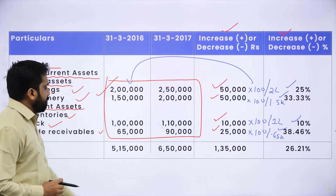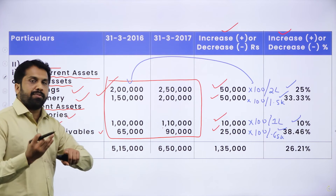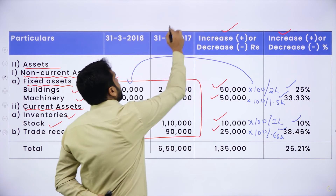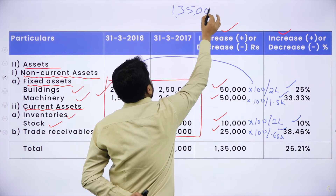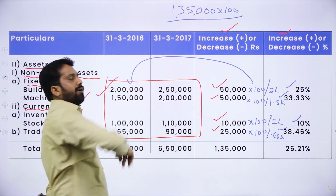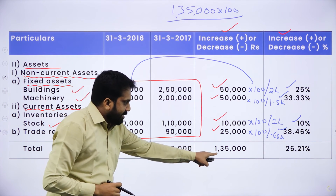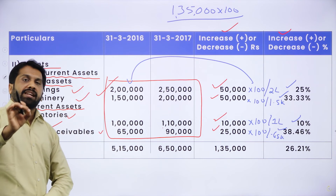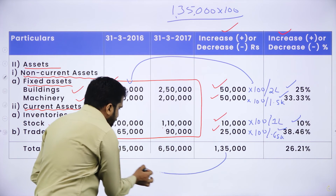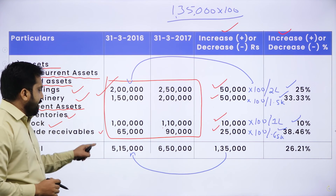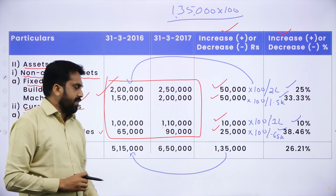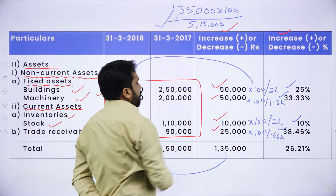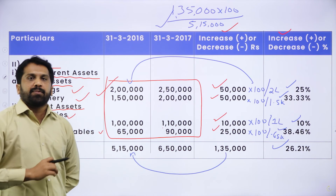For the asset total: it was 5 lakh 15,000 in 2016, and 6 lakh 50,000 in 2017. The difference is 1 lakh 35,000. Multiply 1,35,000 by 100 and divide by the first year total of 5,15,000. Your answer is 26.21%. The denominator for the total is always the first year's total — come back to the first row to find your denominator.